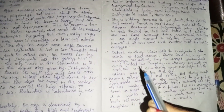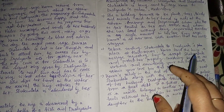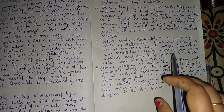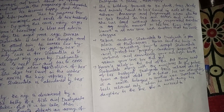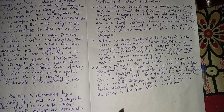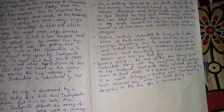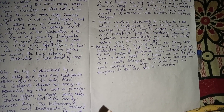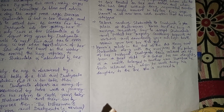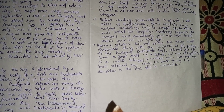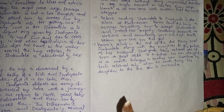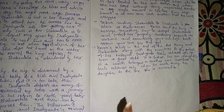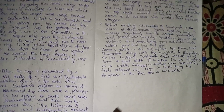Before sending Sakuntala to Dushyanta's palace at Hastinapur, Kanva sent the king a message requesting him to accept Sakuntala and protect her properly — 'Considering hermits as virtuous and considering your own high birth, retain your love for this girl.' At the end of the act, having sent Sakuntala along with the Munijanas to the palace of her husband, Kanva feels relieved as if from a great debt — just as a father feels relieved only when he sends away his daughter to the one she is married to.